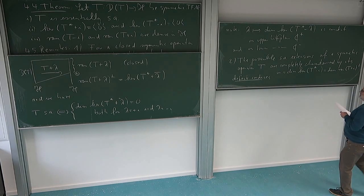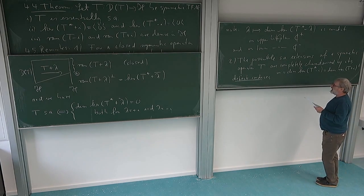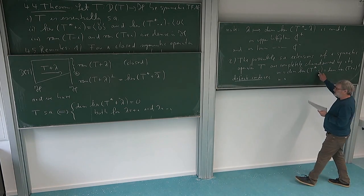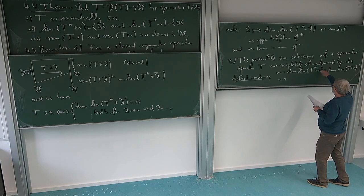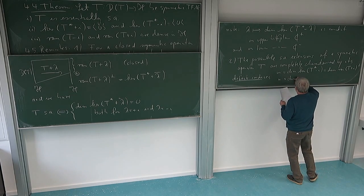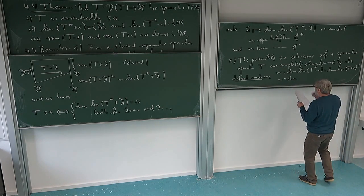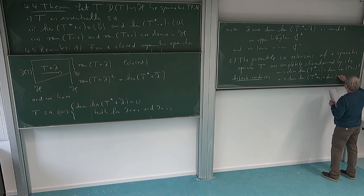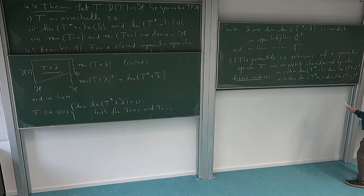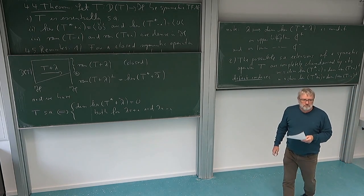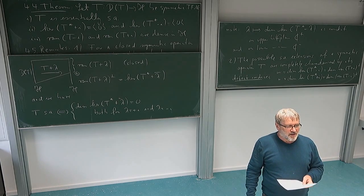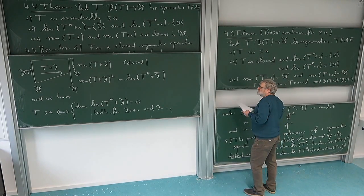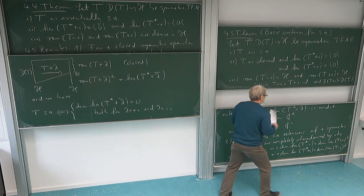So this is the defect index in the upper half plane. And N is the defect in the lower half plane - instead of minus I I could put minus 3I or some other number in the lower half plane, but for the lower half plane I might get another number. So N equals the dimension of the kernel of T* plus I, which is the same as the dimension of the orthogonal complement of the range of T minus I. So those are two numbers which we should calculate for our operator, and then we understand whether we can extend it in a good way to a self-adjoint operator.